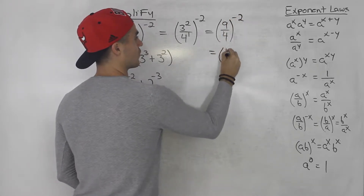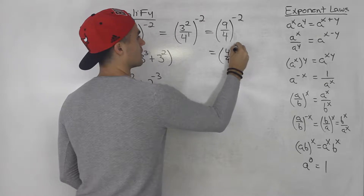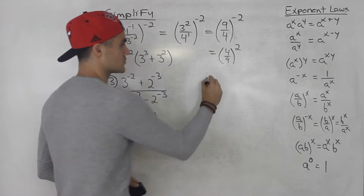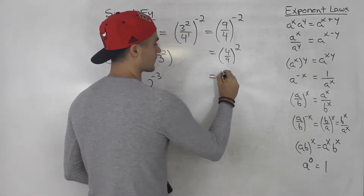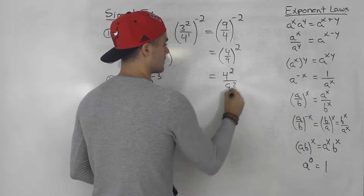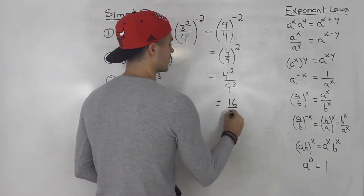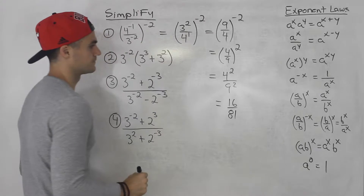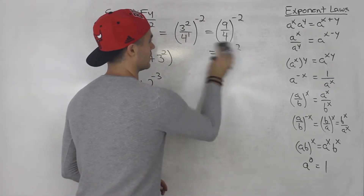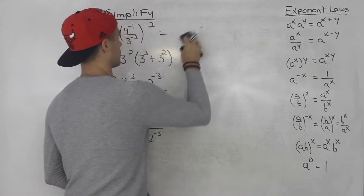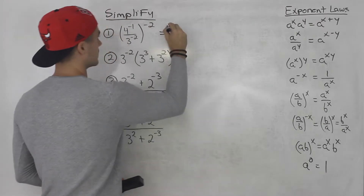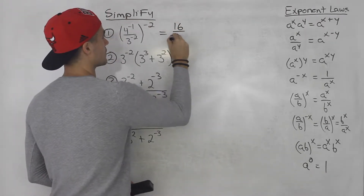This ends up being four over nine to the power of positive two. From here, you've got to distribute the exponent into the numerator and denominator. So this ends up being four squared over nine squared, which ends up being 16 over 81. So 16 over 81 is the answer for number one. We first simplified the bracket, and then we used this law here.